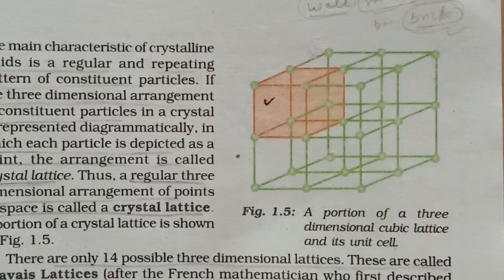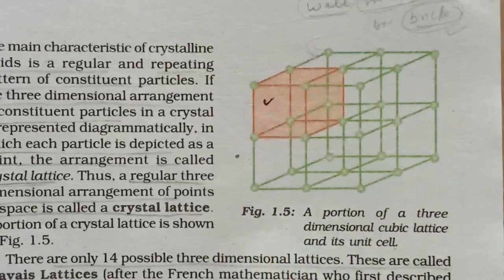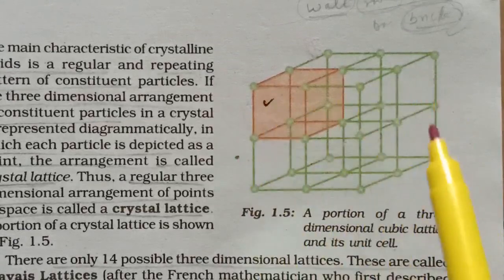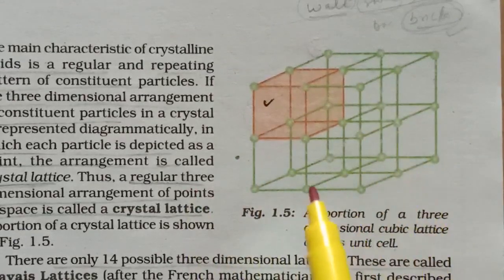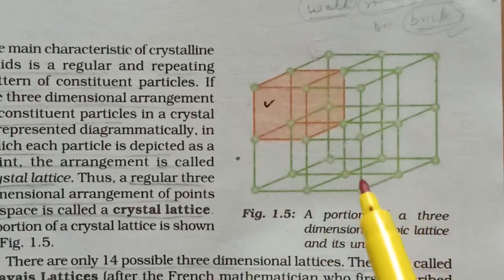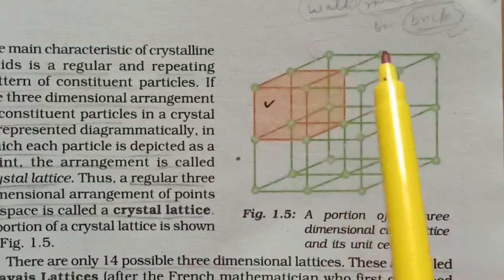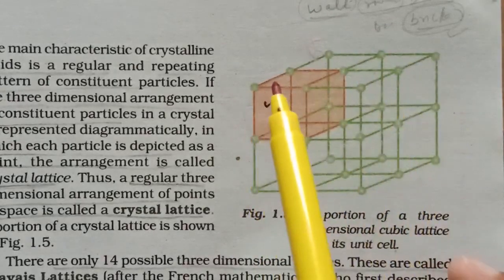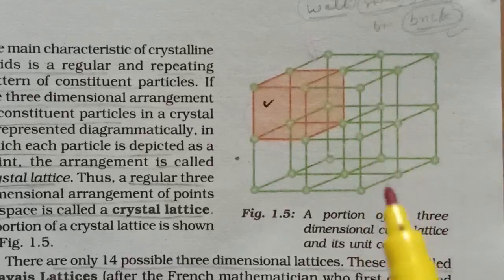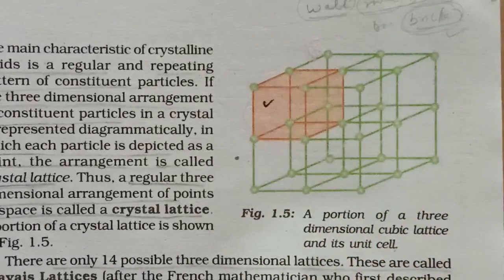Next are the characteristics of crystal lattice. First, each point in a lattice is called a lattice point or lattice site. Here, the points denoted by these spheres are the lattice points. Each point in a crystal lattice represents one constituent particle which may be an atom, a molecule, or an ion.